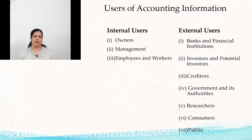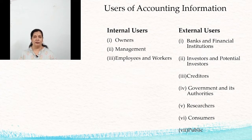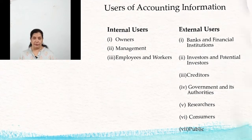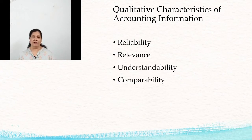Researchers use accounting information for their research work. Consumers are also interested in accounting information. The government fixes prices for certain products; if the business is doing well, prices will be maintained. Consumers are interested in ensuring there is no fluctuation in prices. The public is also interested in accounting information — whether the business is able to provide employment and is working for the welfare of society.